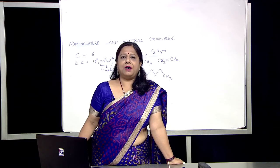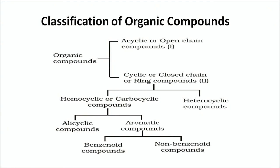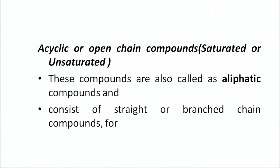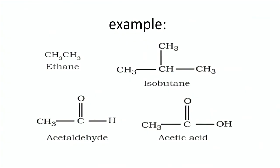Now let us classify organic compounds. Organic compounds can be classified into acyclic or open chain compounds, and cyclic or closed chain or ring compounds. Cyclic compounds can be further classified into homocyclic or carbocyclic compounds and heterocyclic compounds. Homocyclic compounds can further be classified into alicyclic compounds and aromatic compounds. Acyclic or open chain compounds can be saturated or unsaturated; they are also called aliphatic compounds. They consist of straight or branched chain compounds — for example, ethane, isobutane, acetaldehyde, acetic acid.